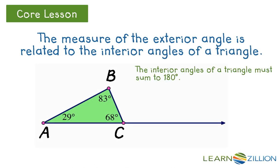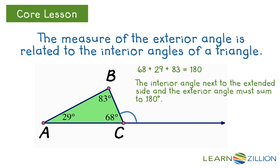We already know that the interior angles of the triangle must sum to 180 degrees. We also know that since the interior angle at point C forms a straight line with its extension, the interior angle next to the extended side and the exterior angle must sum to 180 degrees.